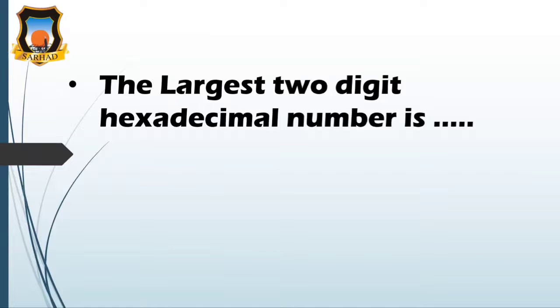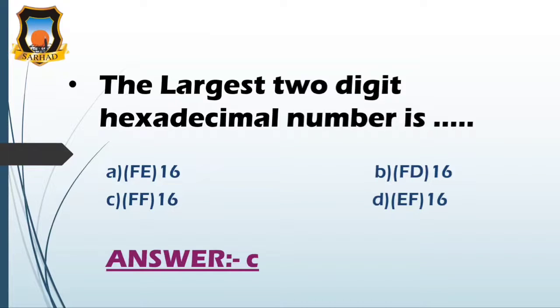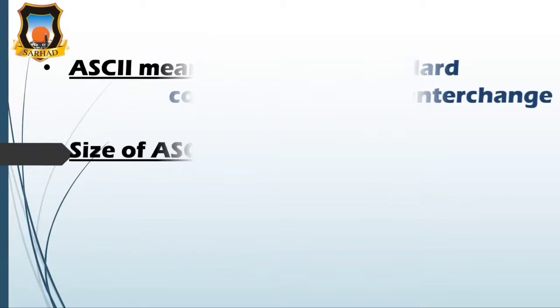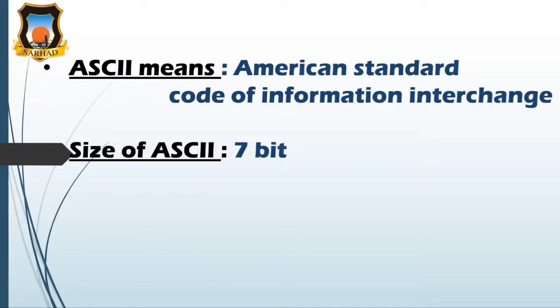Moving on to next, question number 4: the largest two digit hexadecimal number is - option A FE, option B FD, option C FF, and option D is EF. So the correct answer is C, that is FF. Because FE is 254 in decimal system, while FD is 253, EF is 239 in decimal system, and FF is 255. Thus the largest two digit hexadecimal number is FF.